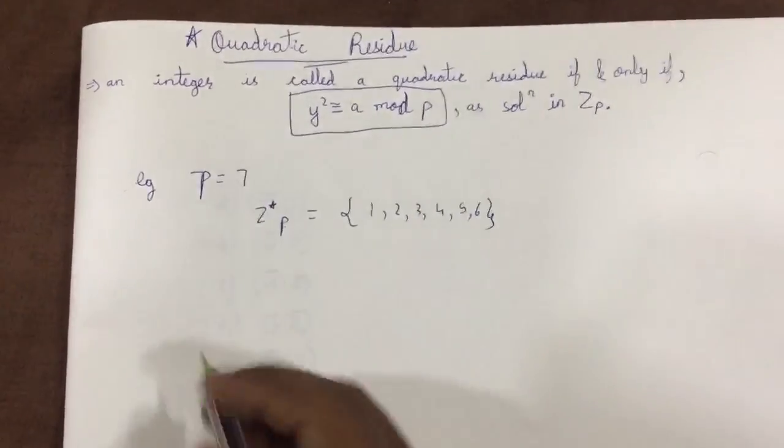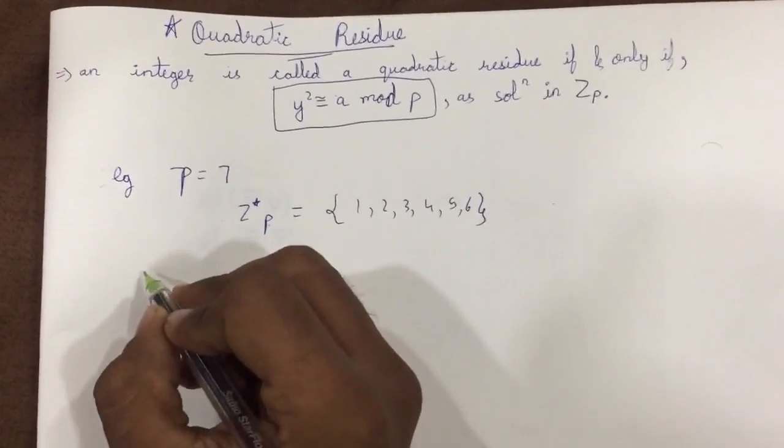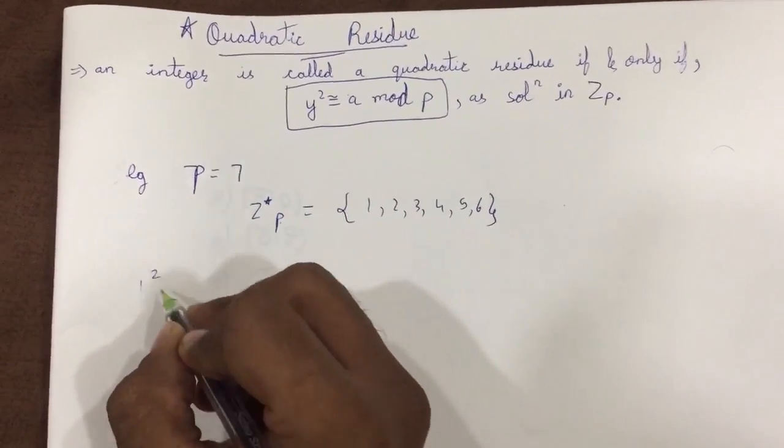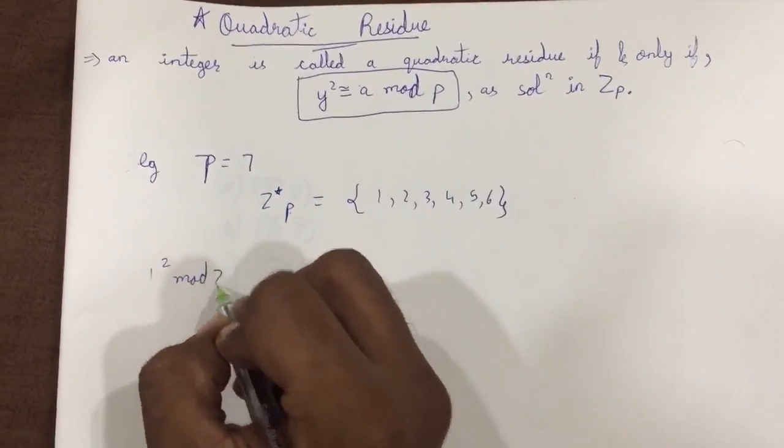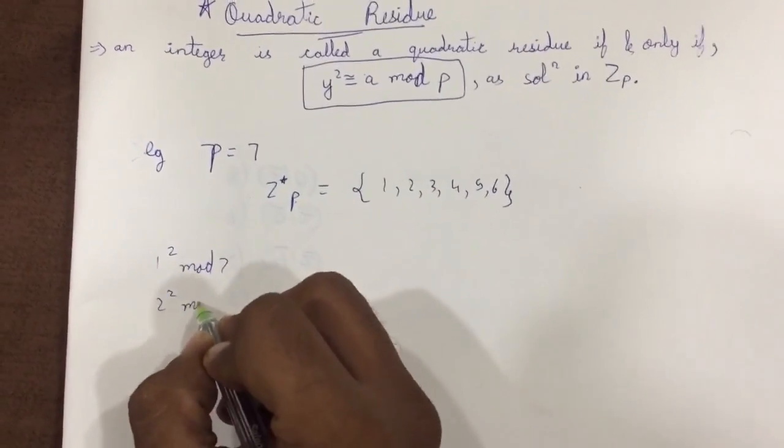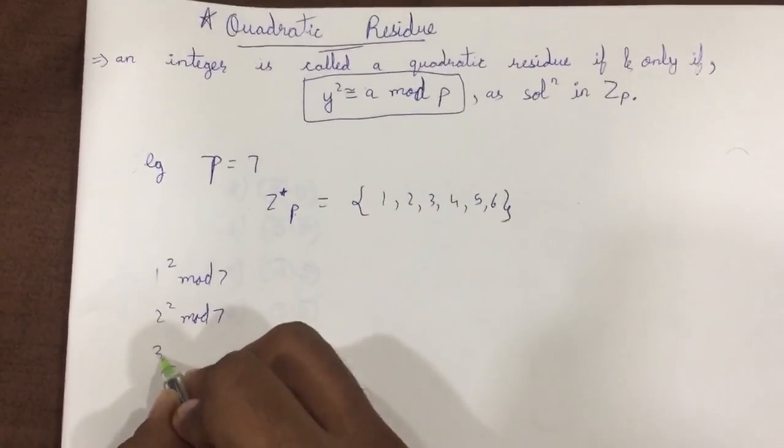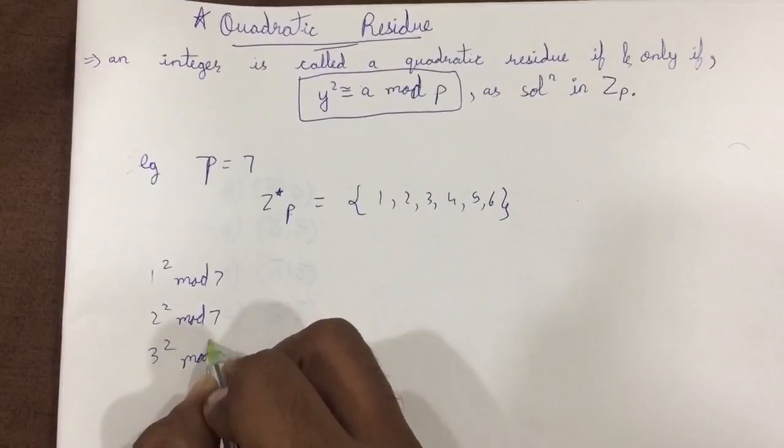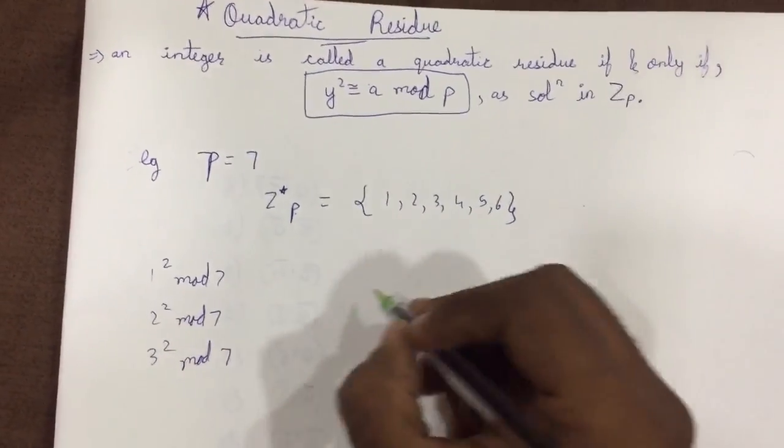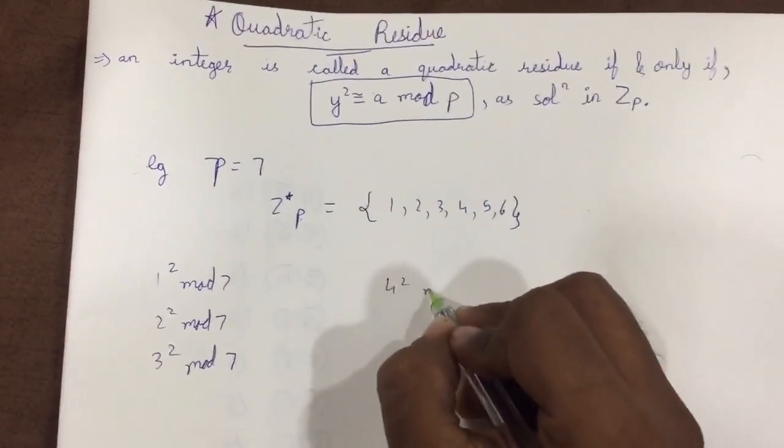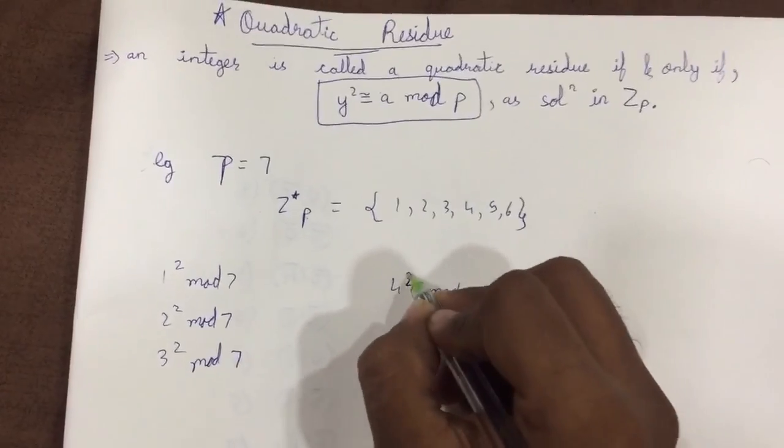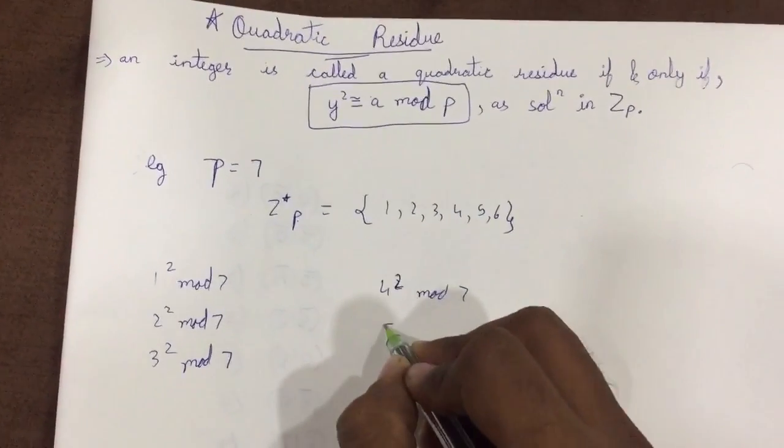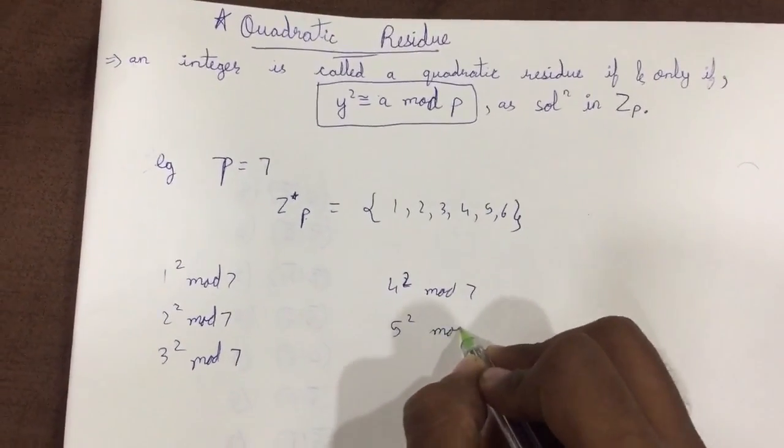Use the modulus 7. Because here we have given p equal to 7. So: 1² mod 7, 2² mod 7, 3² mod 7, 4² mod 7, 5² mod 7, and 6² mod 7. These equal 1, 4, 2, 2, 4, and 1 respectively.